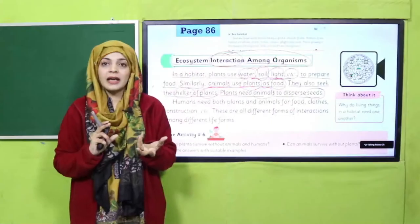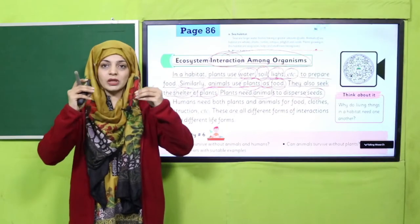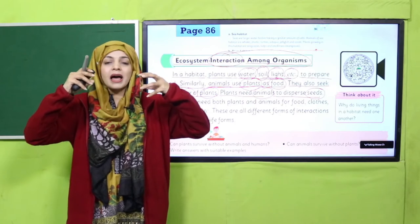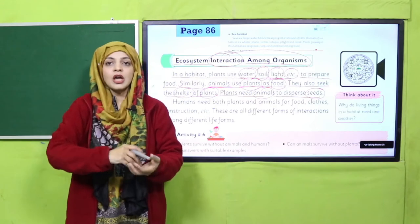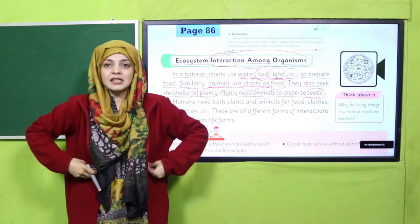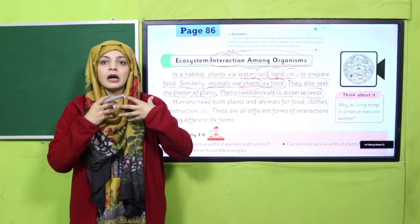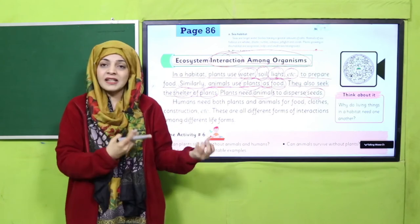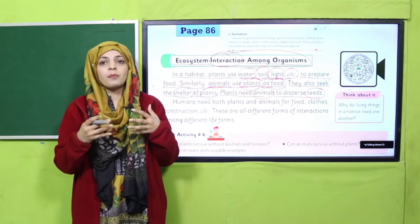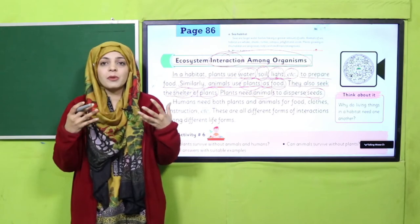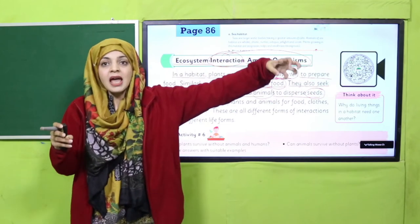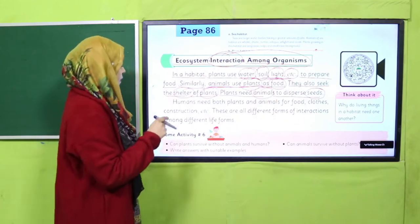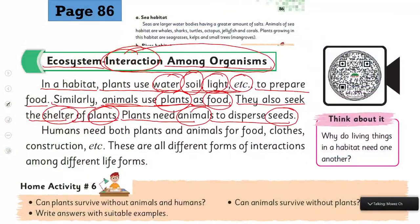Plants need animals to disperse seeds. Plants have seeds — if animals don't move from one place to another, those seeds will stay in the same spot. Some seeds stick to the fur of animals, and some seeds are eaten and come out in the animal's waste. This is how animals help plants disperse their seeds from one place to another.